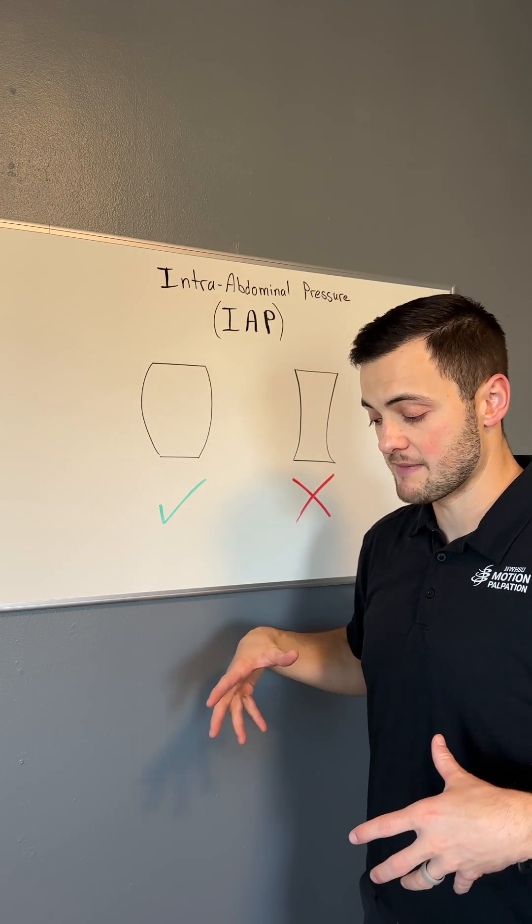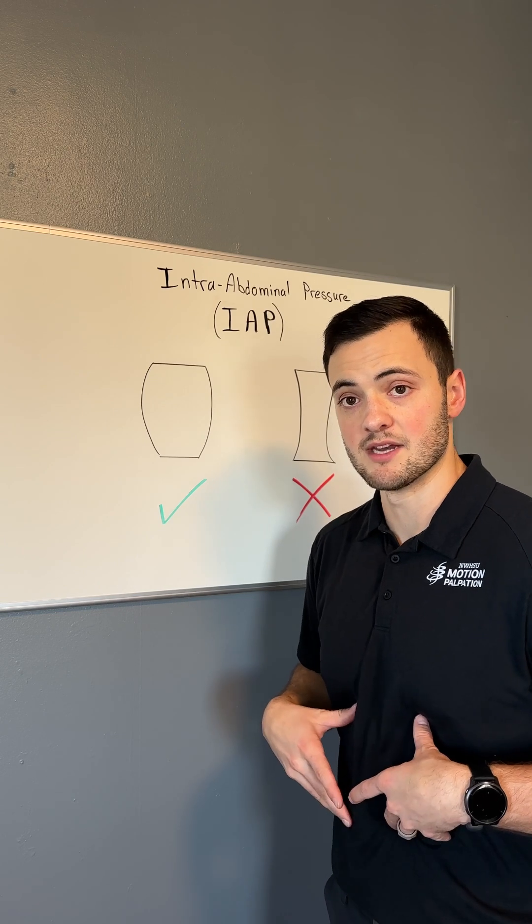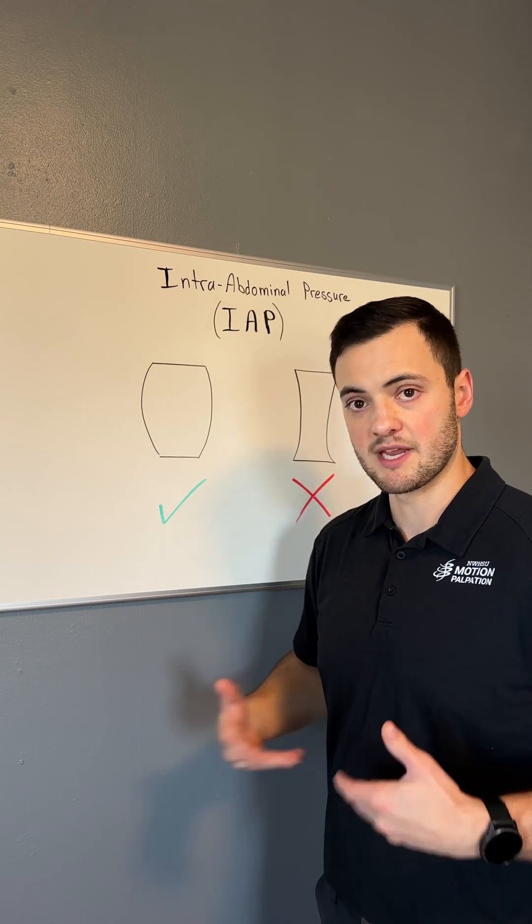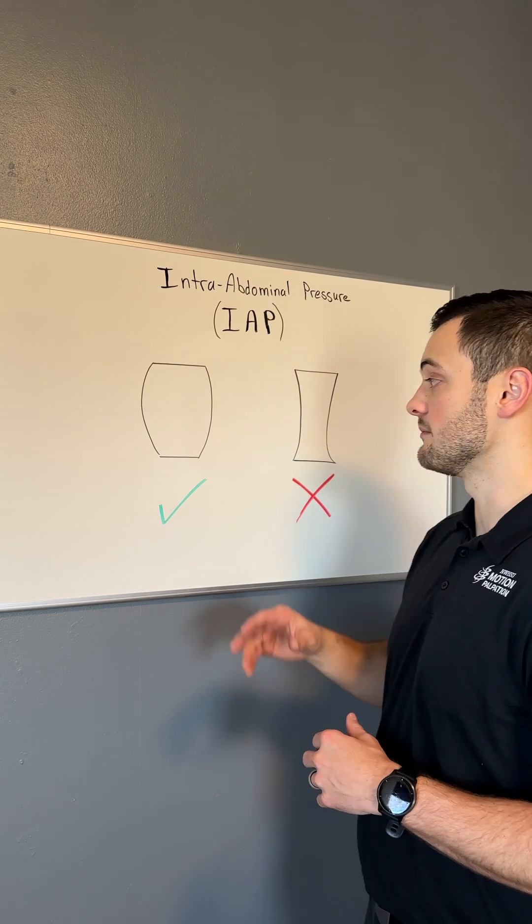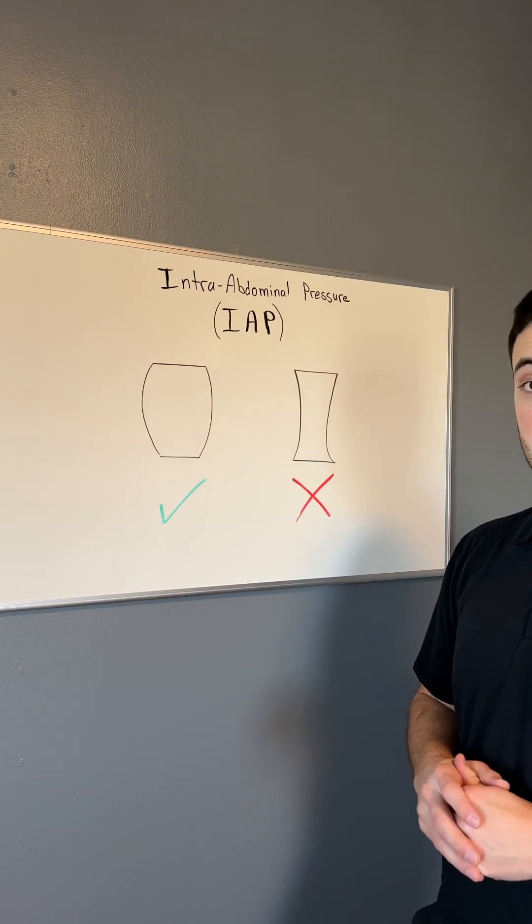If we can imagine a barrel as our abdomen between our lower rib cage and pelvic floor, that's how we can create IAP and get some stabilization where we need it.